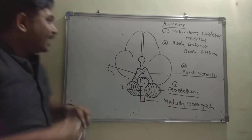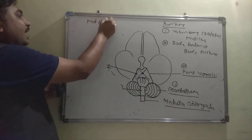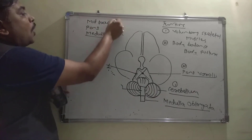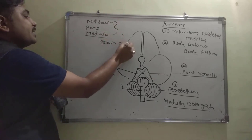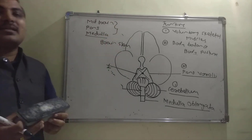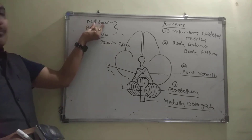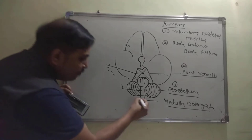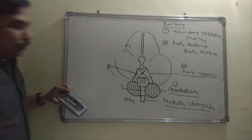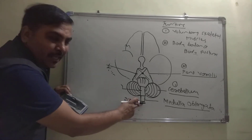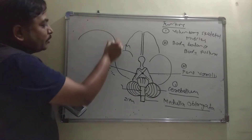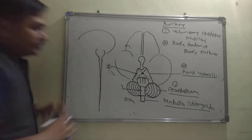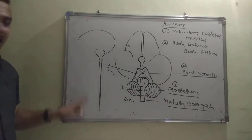The midbrain, pons varoli, and medulla oblongata together are called the brain stem. The medulla oblongata is the posterior-most region of the brain, approximately 2–3 cm long. If you view the brain from the side section, the medulla oblongata continues as the spinal cord.